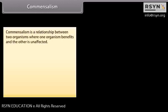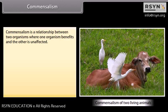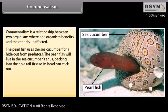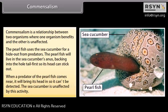Commensalism is a relationship where one organism benefits and the other is unaffected. For example, the pearlfish uses the sea cucumber as a hideout from predators. The pearlfish lives in the sea cucumber's anus, backing in tail-first so its head can stick out. When a predator of the pearlfish comes near, it brings its head in so it cannot be detected. The sea cucumber is unaffected by this activity.